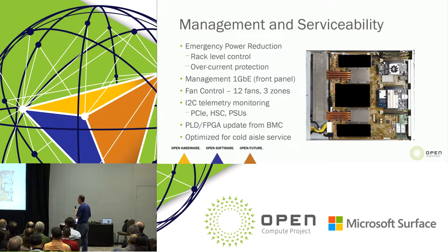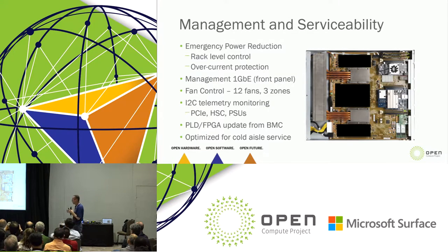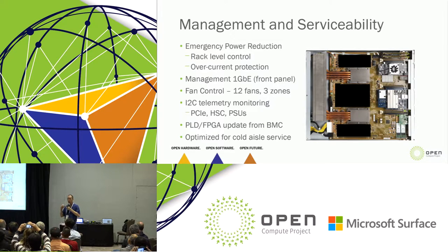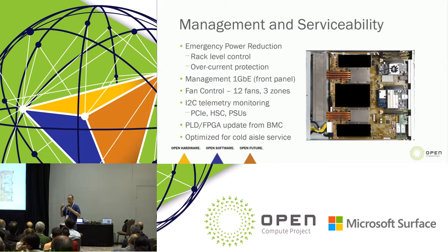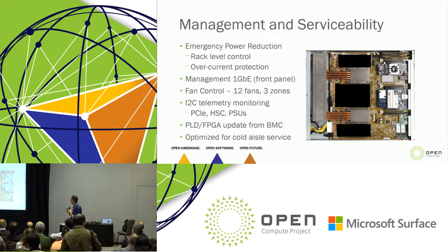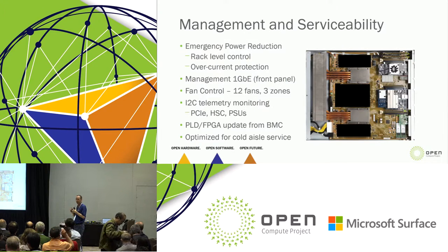When we look at just the motherboard itself, our partners really care about emergency power reduction. We do that at the rack level — detecting the power of the rack and throttling at certain key set points. That enabled us to load more servers into the rack and not over-provision, getting closer to the rack's power limits. Internally on the board there's going to be over-current protection so that the system can go down gracefully in the event of something catastrophic.